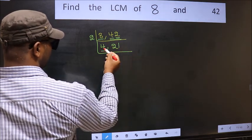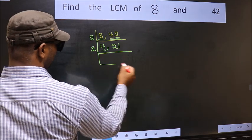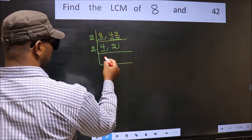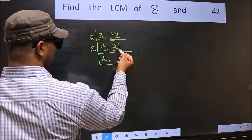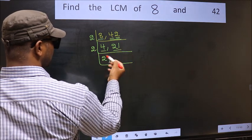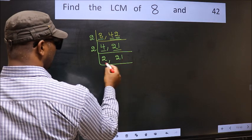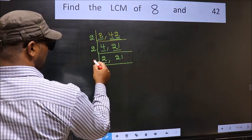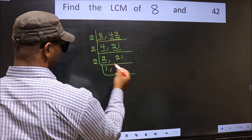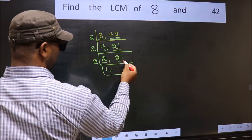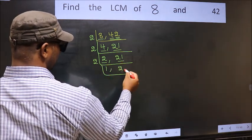Now here we have 4 — 4 is even, so take 2. When do we get 4 in the 2 table? 2 times 2 is 4. Now the other number 21 is not divisible by 2, so we write it down as it is. Now here we have 2 — 2 is a prime number, so 2 times 1 is 2. The other number 21 is not divisible, so we write it down as it is.